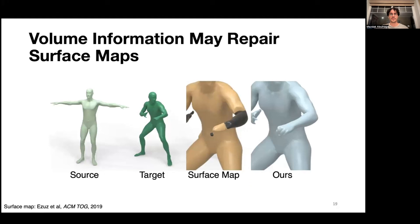We also found that volume information may repair surface maps. You can see a state-of-the-art surface mapping approach here results in areas of volume collapse, because surface distortion energies are often not aware of interior volume or are not extrinsic, whereas our fully volumetric approach corrects for this.